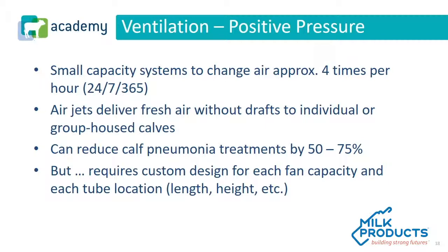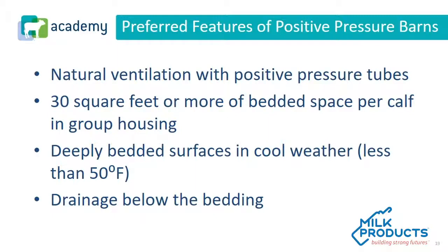Positive pressure systems have been shown to be very effective in reducing calf respiratory disease, but this effectiveness depends on each system being designed for each specific barn — it is not a one-size-fits-all system. With positive pressure, you take advantage of the same principles as natural ventilation but through the tubes. Often you can achieve this with far fewer fans, so while the tube cost is higher, electricity and total fan costs are often much lower, since one fan can serve a wide range of barn sizes effectively.